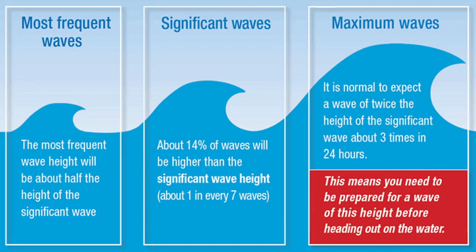To summarize: most of the waves you encounter will be about half the significant wave height. About every seventh wave is likely to be above the significant wave height, anywhere from just above to double the height, with it being very rare to encounter one double the height — about three waves double the significant wave height every 24 hours. If the swell period is very short, you certainly shouldn't be out in anything other than about a meter significant wave height.